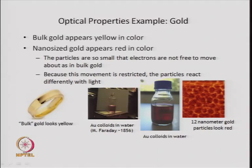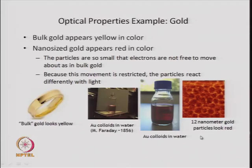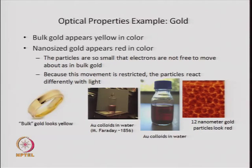Today we know that colored glasses from antiquity are made of gold nanoparticles, and people have also used silver, cobalt, and other materials. To recap: bulk gold is yellow; a solution of gold looks pink as made by Michael Faraday. Modern synthesis of gold colloids in water gives 12-nanometer gold particles which look red in color in an optical micrograph. This color change of gold from yellow to a different color is due to variation in the band gap of the material, which we will discuss in the next few slides.